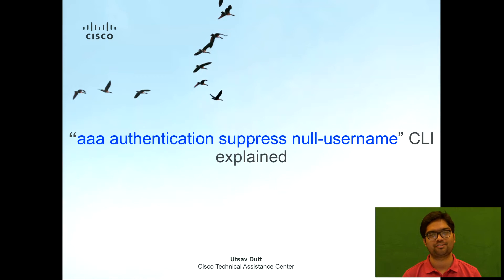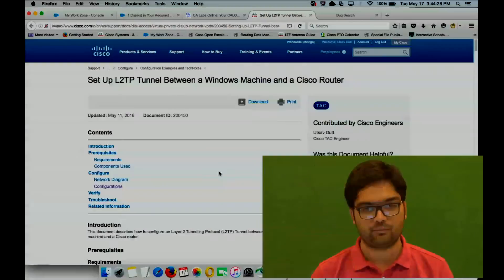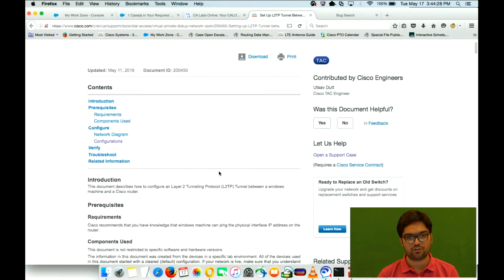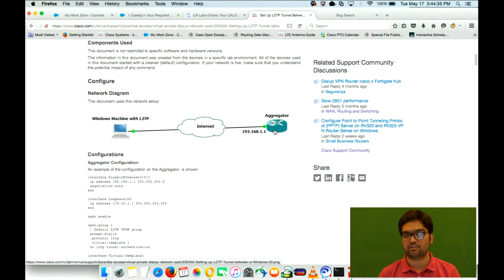Hello everyone, today we will discuss AAA authentication suppression of null username CLI on a Cisco IOS. Let me show you a quick topology of the setup we have in this lab — it's just one Windows machine connected to an aggregator, which we'll call a server.